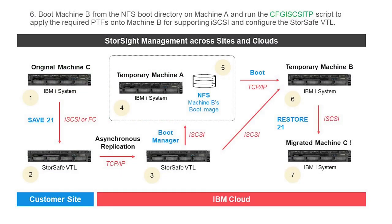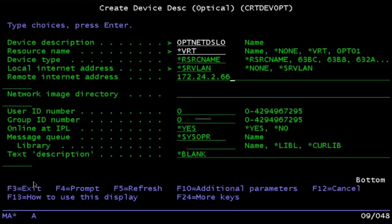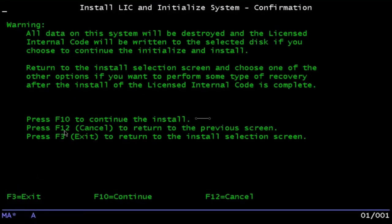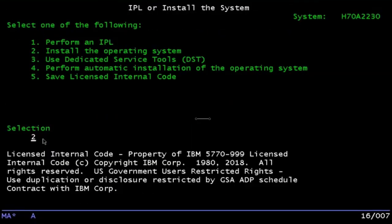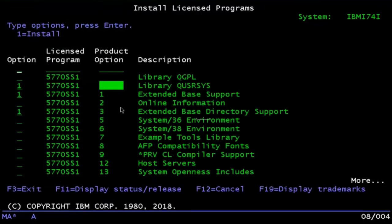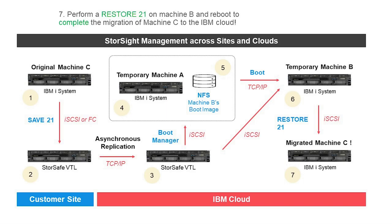In the final stages of migrating Machine C to the IBM or MSP cloud, we first stand up a temporary IBM i server called Machine B. Once Machine B is up and running, we run the CFGIS CS ITP script to apply the required PTFs onto Machine B for supporting iSCSI and then configure the StoreSafe VTL. We assign the TCP/IP address to Machine B and install the licensed internal code, then the operating system and any licensed programs. Machine B is now up, running, and healthy.